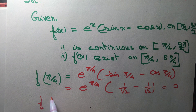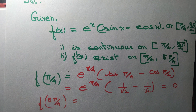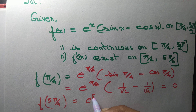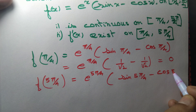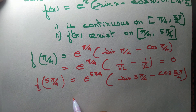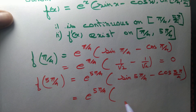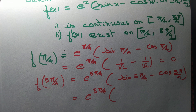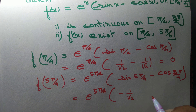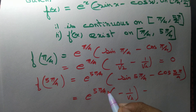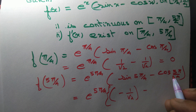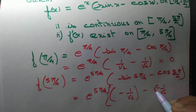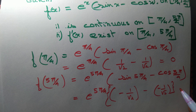Now f(5π/4) = e^(5π/4) · (sin(5π/4) − cos(5π/4)). Since 5π/4 is in the third quadrant, sin(180° + θ) = −sin θ, so sin(5π/4) = −1/√2. Also cos(180° + θ) = −cos θ, so cos(5π/4) = −1/√2. Computing it, we get 0 once again.